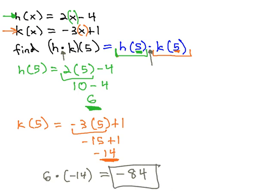We got that answer by plugging our number into both h and k, then doing the operation in the middle. In the first example, we added the results together; in this example, we multiplied them.